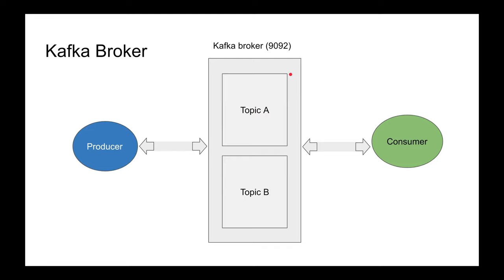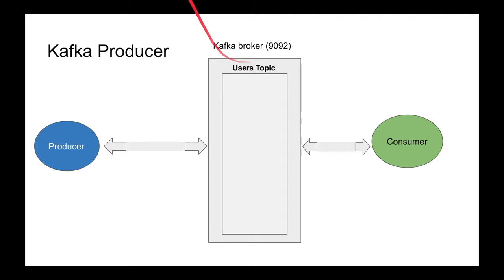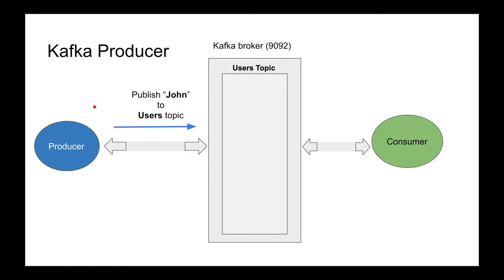Let's zoom in to the actual topic. So I have a topic called 'users' in my Kafka broker, and I'll talk about how producing works. The producer sends a request saying 'broker, publish the string John to the users topic.' The broker takes that string and appends it to the topic. And that word 'append' is very critical in Kafka — we'll explain that concept.